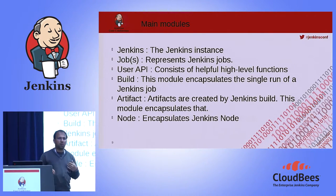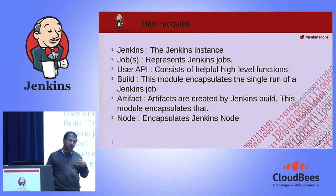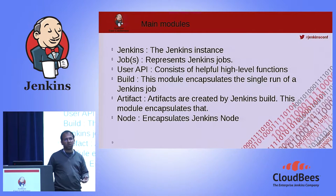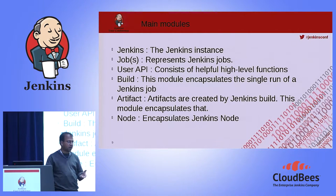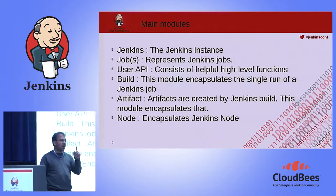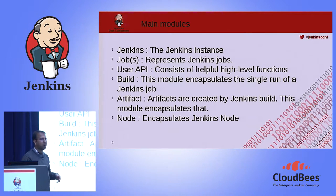Because of the limited documentation, you have to read the source code — that's the best way. When I was first using this library, every time I needed to use a method I would read the source code, or I'd call type() or dir() on the return value to find all available methods. I learned by trial and error. But once you get the hang of it, you can write really complicated orchestration — I was just talking to someone during lunch who does lots of orchestration using the Python API.